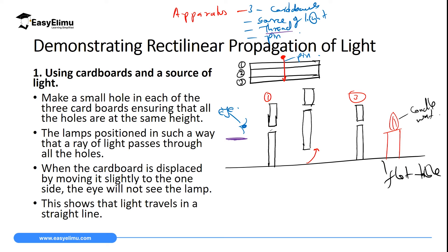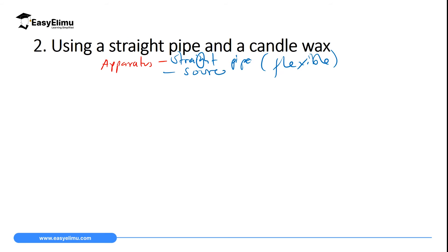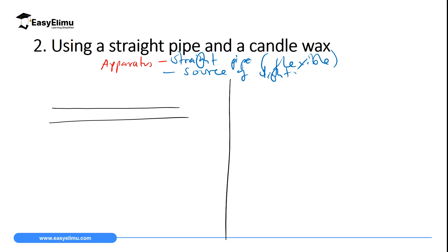That proves that light travels in a straight line. We can also perform another experiment using just two pieces of apparatus. The first is a straight flexible pipe — flexible so that you can change its shape and bend it when needed. The second is a source of light. You take the straight pipe and place the candle flame at one end.